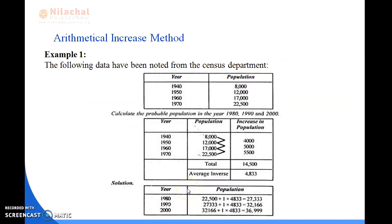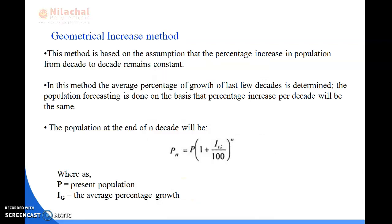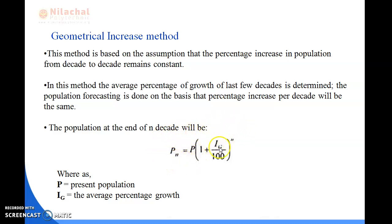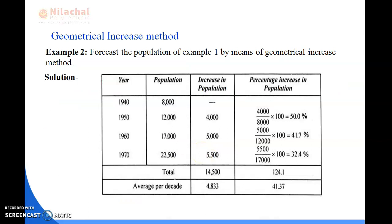Next is the geometrical increasing method. This method is based on the assumption that the percentage increase in population from decade to decade remains constant. The formula derived is: Pn = P × (1 + ig/100)^n, where Pn is the population after n decades, P is the present population, ig is the average percentage growth, and n is the number of decades.